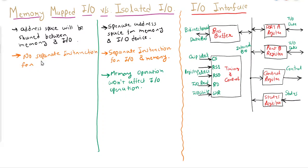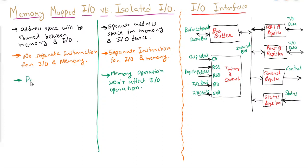Because we have a common address space, we will also have common instructions — there will be no separate instruction set for IO and memory. The same instructions used for memory can be used for interface registers or the addresses assigned to IO devices.